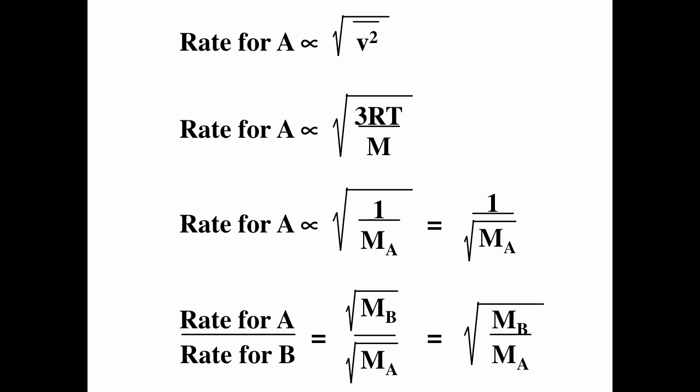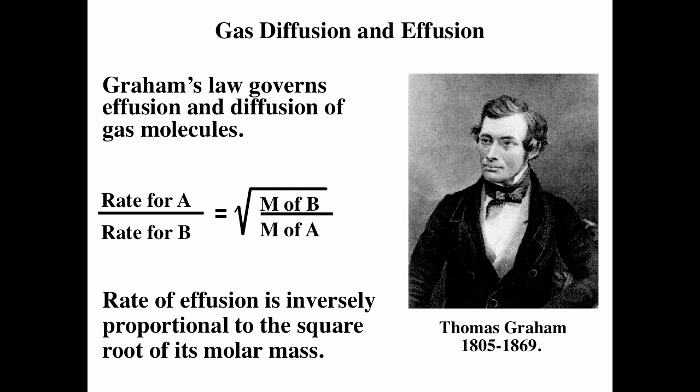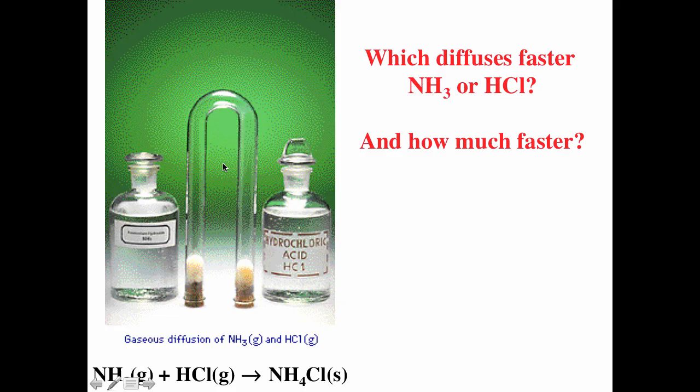If you want to compare the rates of two gases, the rate of A versus rate of B equals the square root of the inverse of their molar masses. If the rate of A is on top, the molar mass of A is on the bottom; the rate of B is on the bottom, and the molar mass of B is on top, because of the inverse relationship. The lighter particles will diffuse and effuse faster; the larger particles will effuse and diffuse slower. This is Graham's Law, which governs both effusion and diffusion of gas particles.